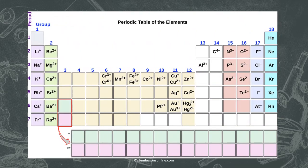Now let us see how to determine the charge on each ion. It is super easy from the periodic table. For group 1, these elements have a charge of plus 1 — Li plus 1, Na plus 1, K plus 1. So all group 1 will have plus 1 charge, and group 2 will have plus 2 charge. We are not talking about the transition metals right now, because I am talking about the binary compound. We will talk about that special category later on.